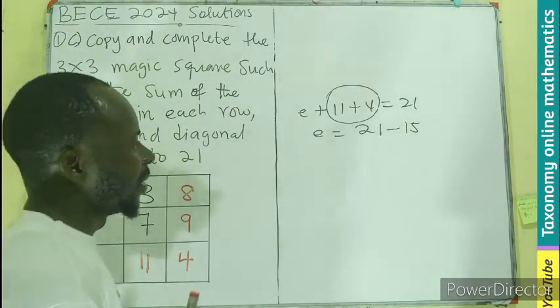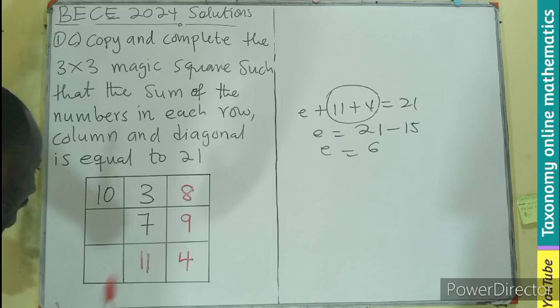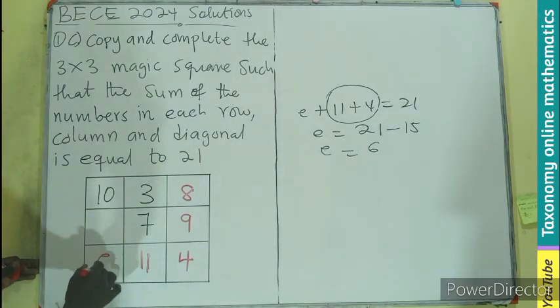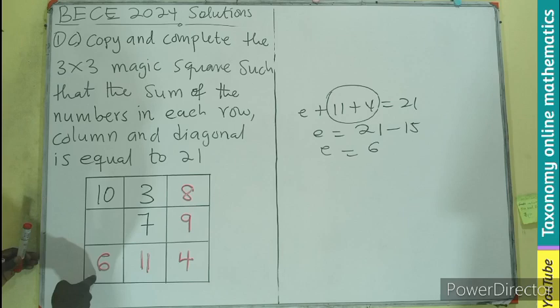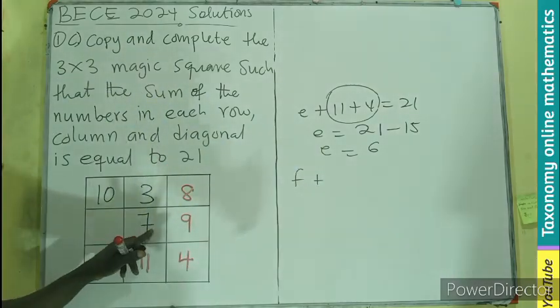So e will be 6. So I'll be having this my area to also be 6. So now I can either go this way or 1, 2, 3, any dimension I want to go. Let's go there. So I'll be having f plus 7...